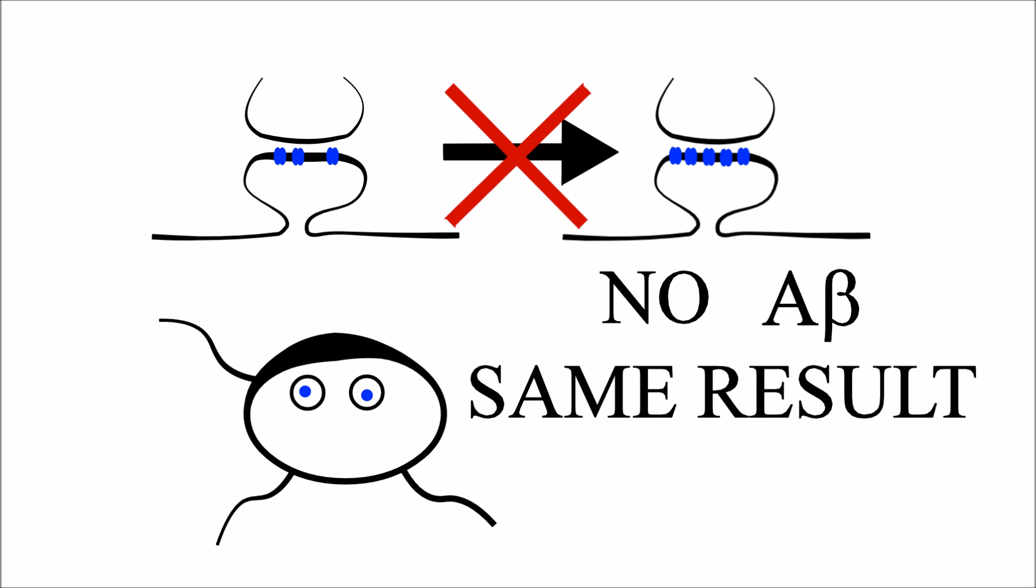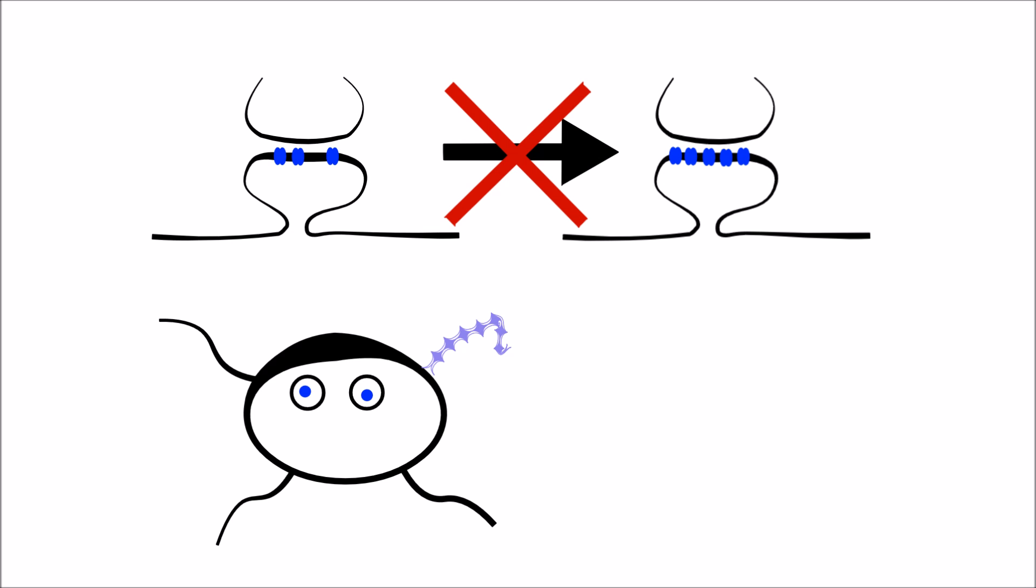Lastly, we also find that if you replace the retromer protein with a mutant version found in Parkinson's patients, the system is broken in a similar way to depleting the protein.